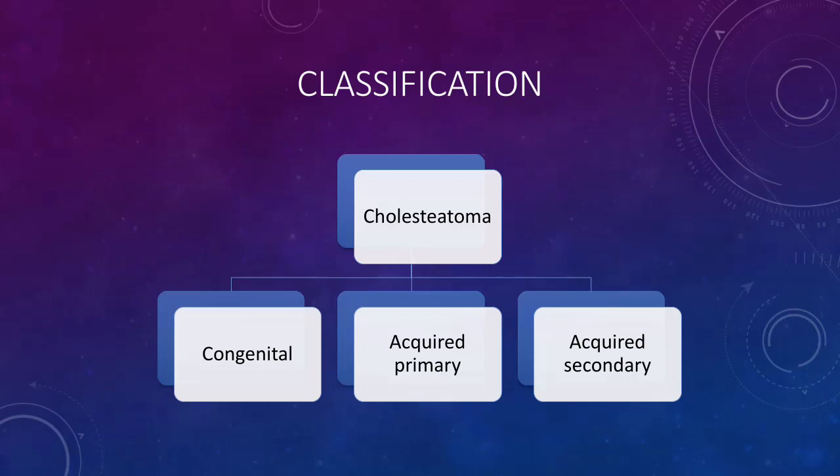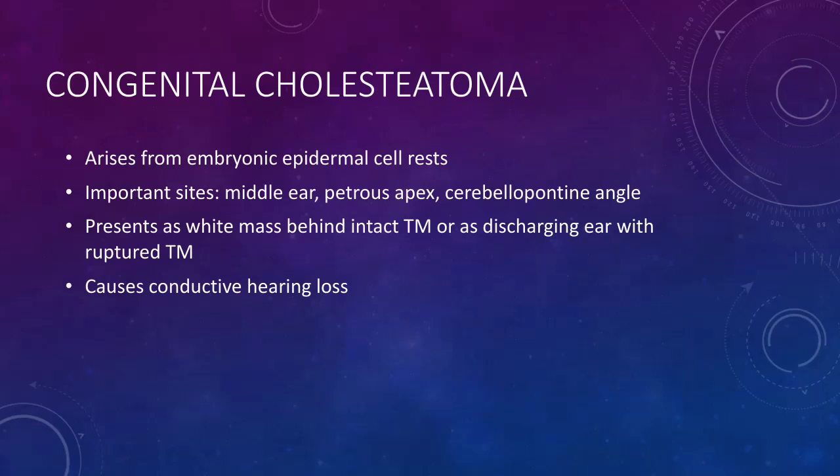The classification of cholesteatoma. Cholesteatoma can be classified into congenital and acquired types. In acquired, it is further divided into primary and secondary acquired. In congenital cholesteatoma, the cholesteatoma arises from the embryonic epidermal cell rests present in the middle ear cleft or the temporal bone. The important sites include the middle ear, petrous apex, or cerebellopontine angle. It presents as a white mass behind an intact tympanic membrane, or it may also present with spontaneous rupture of the tympanic membrane and discharge in the ear, similar to chronic suppurative otitis media.